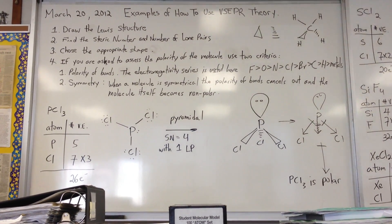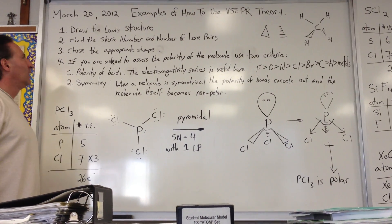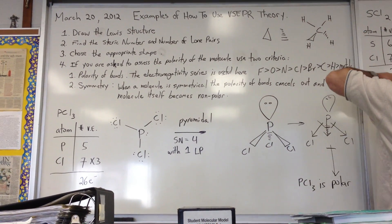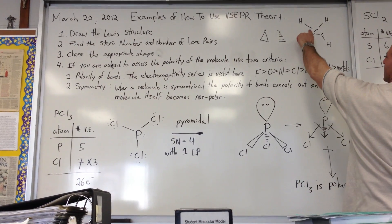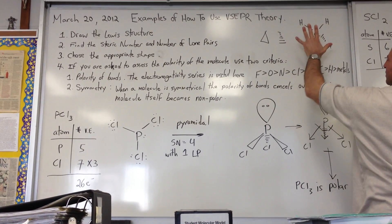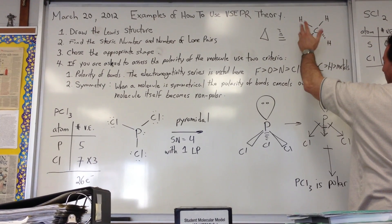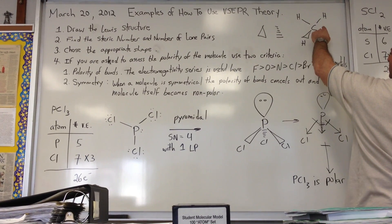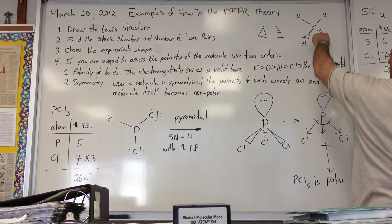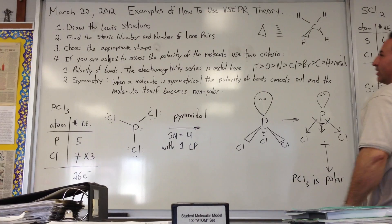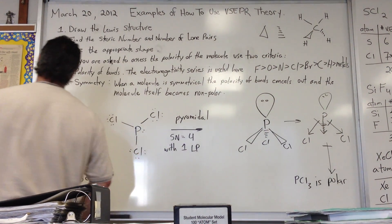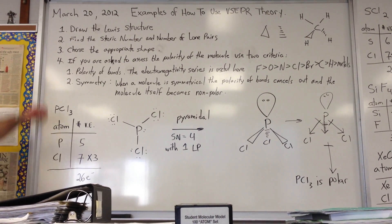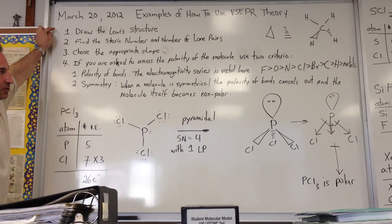In today's class, we're going to look at examples of how to use the best fit theory. When you draw a molecule — for example, methane — the straight lines represent bonds in the plane of the board. The triangular shape means it's coming out at you. The hatched shape means it's going behind the plane of the board. Drawing a Lewis structure is the first step in obtaining a correct geometry.